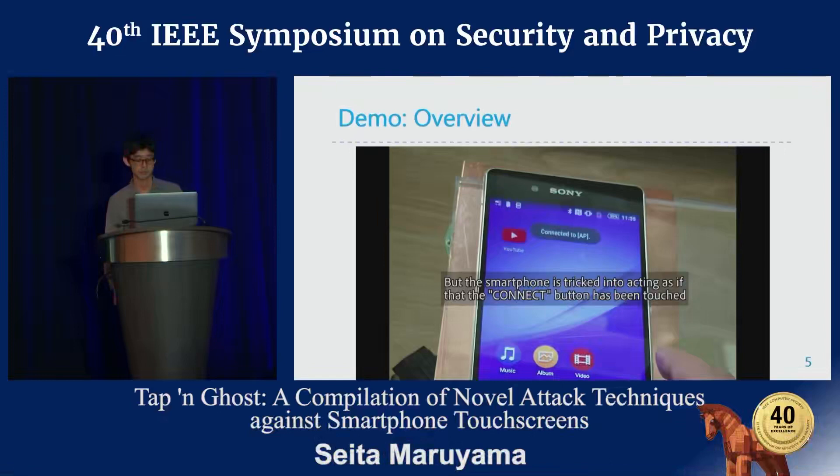In our paper, we also proposed countermeasures. The first countermeasure is to add user approval processes: before opening a website specified by an NFC tag, the Android OS should get the user's confirmation, which would prevent the attacker from obtaining smartphone information and conducting attacks against touch screens. The other countermeasure is to detect the malfunction on touch screens — since the ghost touch generator generates false touches with characteristic spatial patterns, identifying these patterns will help prevent the attack.